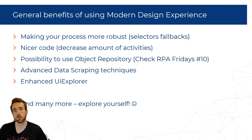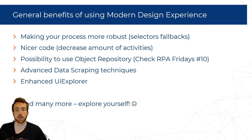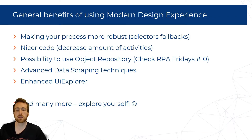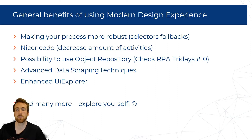Modern design experience is something you can turn on or off for your projects in UiPath. One of the key benefits is that it makes your process more robust, especially because it natively introduces selector fallbacks — fuzzy and image. It also leads to nicer workflows because some activities are merged, so you end up using fewer activities overall.